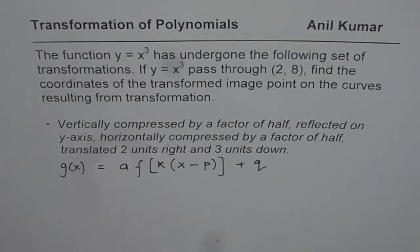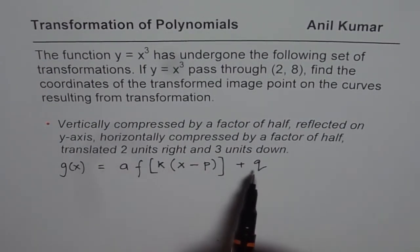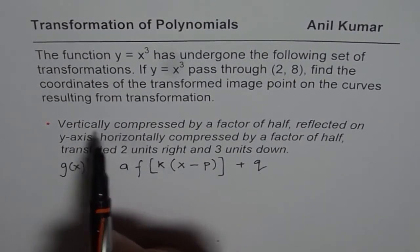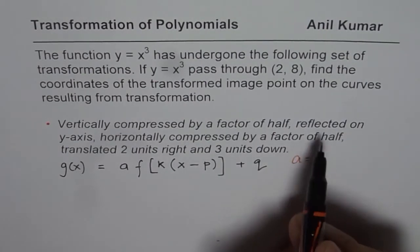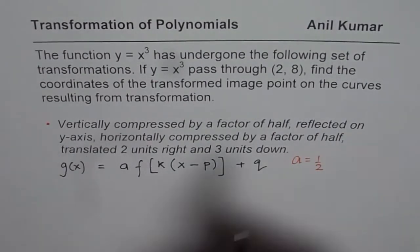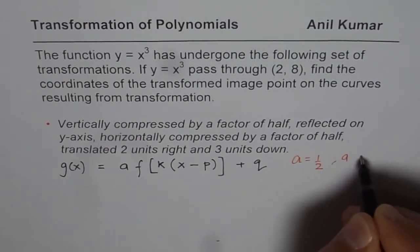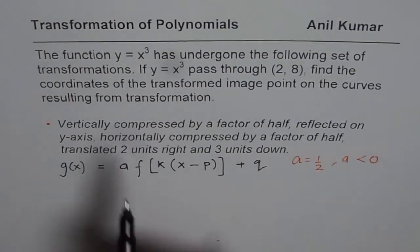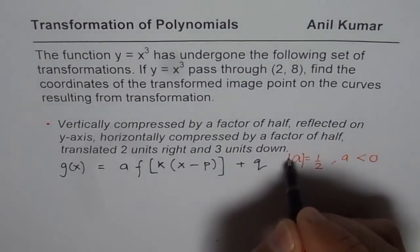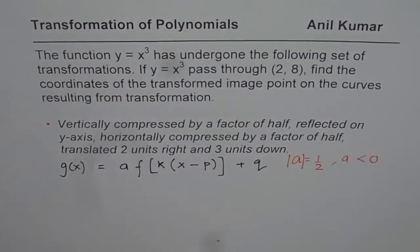Now from the description, we can write down what is a, what is k, p, and q, and what is the function. And then we'll get our equation. Let's begin by writing what these coefficients are. Vertically compressed by a factor of half will mean a equals half. Reflected on y-axis means a is less than 0, it's negative. So we'll say absolute value of a is half, but a is negative.